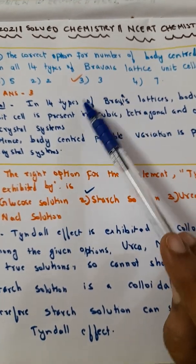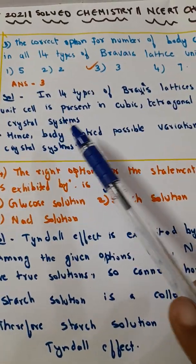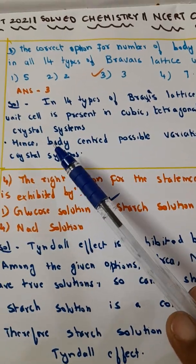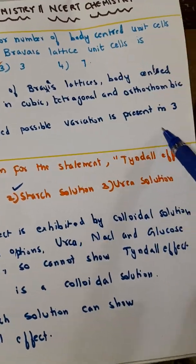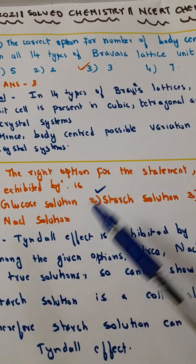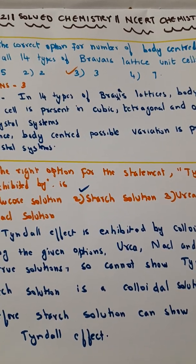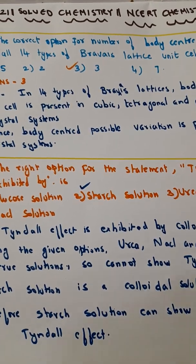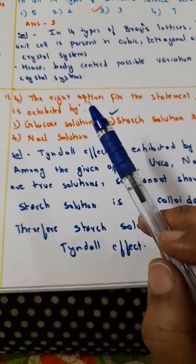The correct option is 3. See, in all the 14 types of Bravais lattice, a body centered unit cell is present in cubic, then tetragonal, then orthorhombic crystal systems. Body centered is possible - that possible variation can be present in 3 crystal systems. Most of the questions are really easy. Only thing is that you should be well aware and have thorough knowledge of the concepts. Only then you will be able to look at the question and choose the correct option.